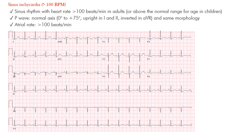So let's get started. Sinus tachycardia, as the name implies, means that sinus rhythm is present, but it's at a fast rate — over 100 beats per minute in adults, or above the normal range for the child at that age. Children tend to have slightly faster rates, so above the upper limit of normal is considered tachycardia. For adults, we focus on above 100 beats per minute.